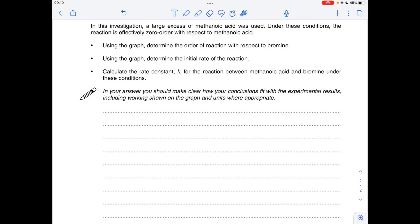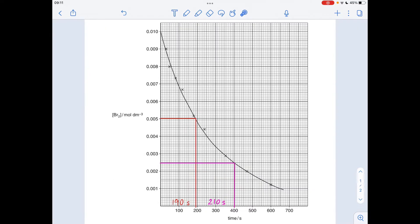Okay, so first thing, going to use the graph to determine the order of reaction with respect to bromine. So I've managed to do the first two obvious half-lives. I've gone from that concentration to half, so that's in red there. You can see the time period for that to happen is 190 seconds.